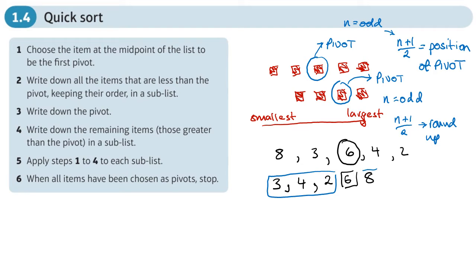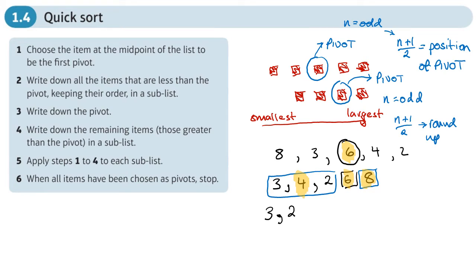We highlight 6 as a chosen pivot and repeat the process. The next pivot on the left sub-list is 4. A single value like 8 becomes its own pivot. Then, 2 moves over to the left of the pivot 4, while 3 was already smaller than 4 and stays. So we get 2 next to the pivot of 4.